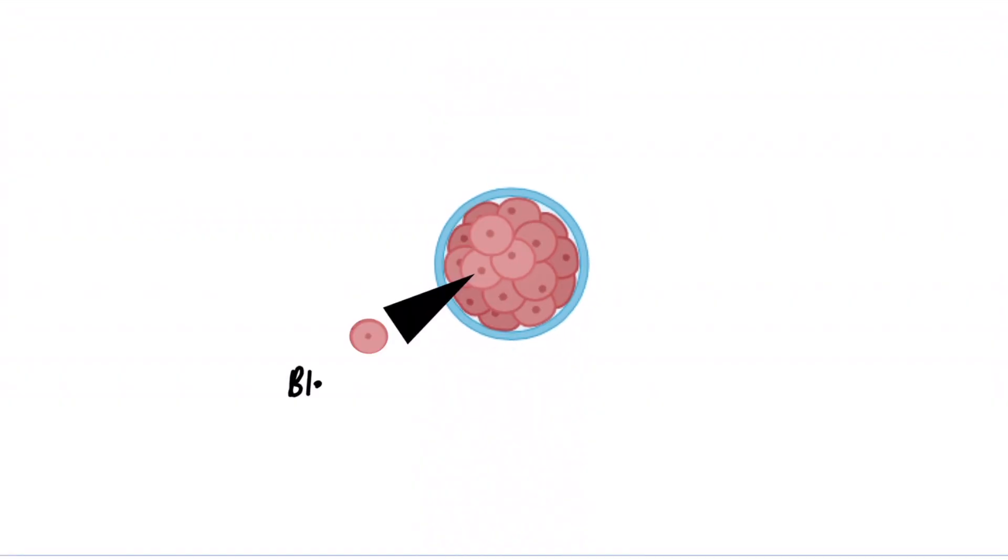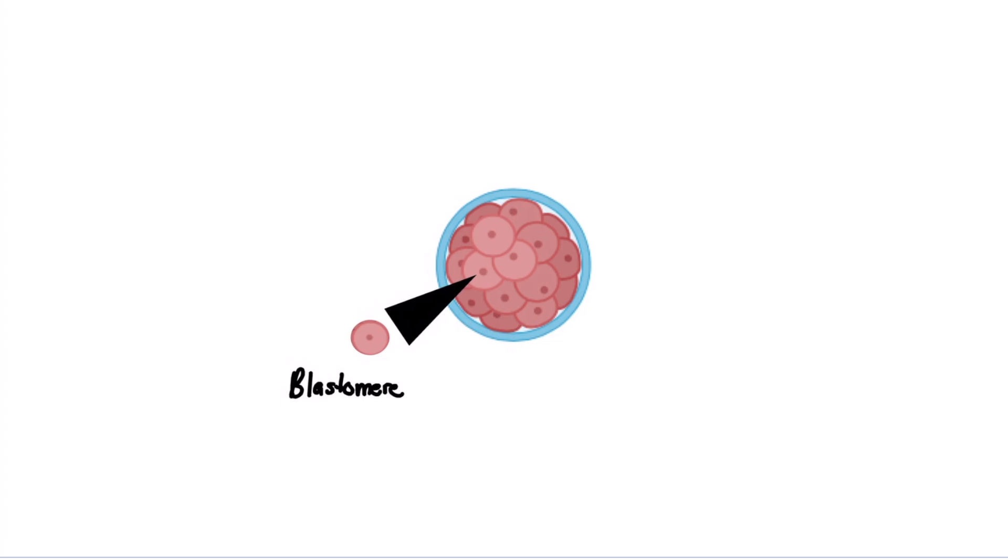This allows the cytoplasm to partition into many smaller cells called blastomeres. At the 16-64 cell stage in the vertebrate embryo, the blastomeres develop into a solid, berry-shaped ball called a morula.